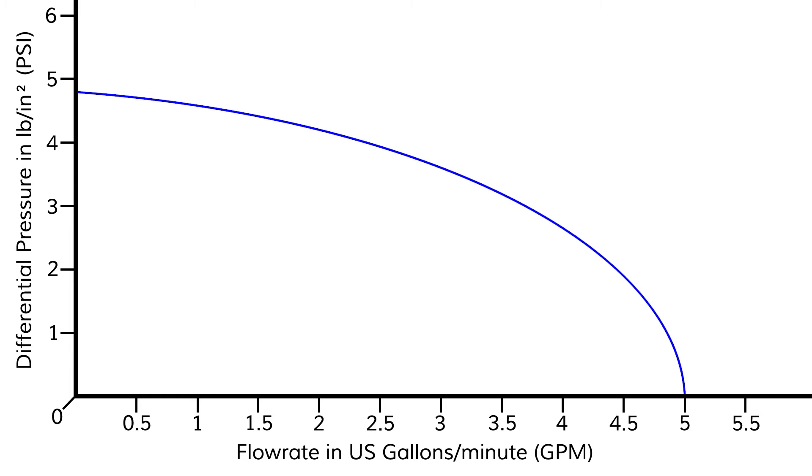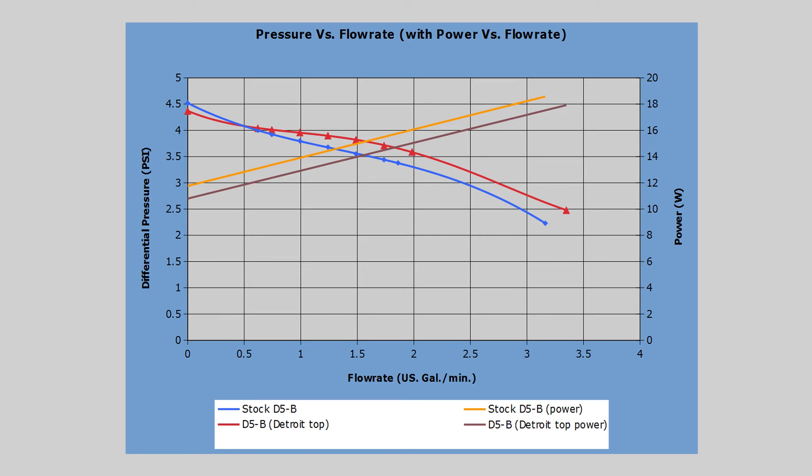Let's take a look at an example. Here we have two actual performance curves, one for the stock Laing D5 Basic and one for the D5 Basic with an old aftermarket top on it that was manufactured by Detroit Thermo. The Detroit Thermo curve is in red and the stock D5 Basic curve is in blue. You can see that the aftermarket top actually caused a reduction in maximum pressure. However, the top was engineered in such a way as to push this section of the performance curve up and out, causing it to actually outperform the stock D5 Basic in the range at which most water cooling systems usually operate. This is an example of augmenting a pump's performance curve in a way that isn't accurately reflected if you're only looking at the maximum pressure and maximum flow data.